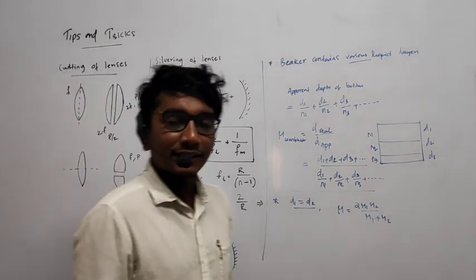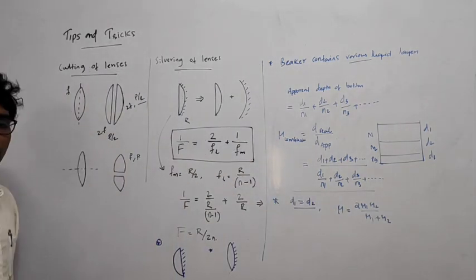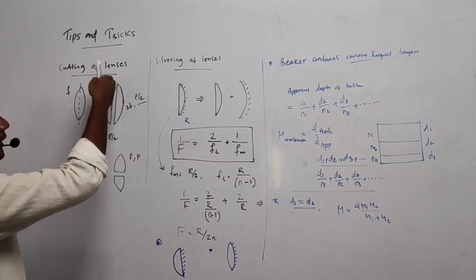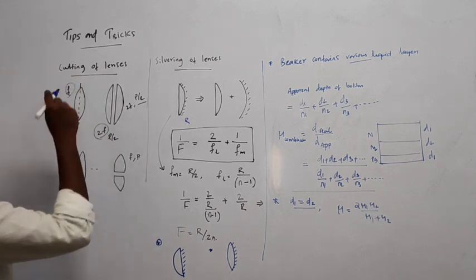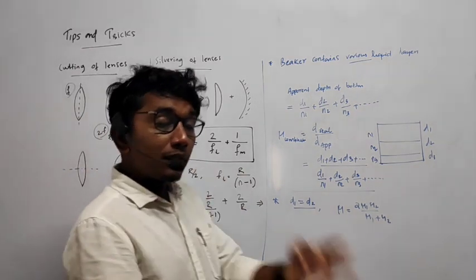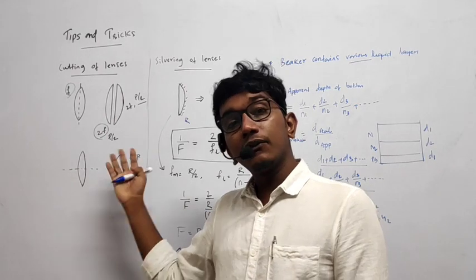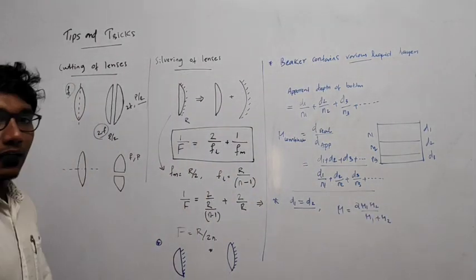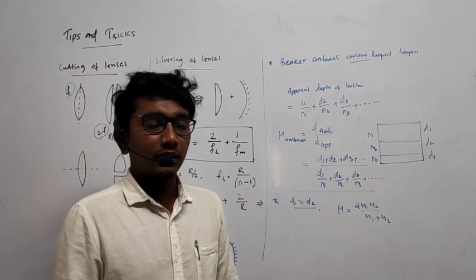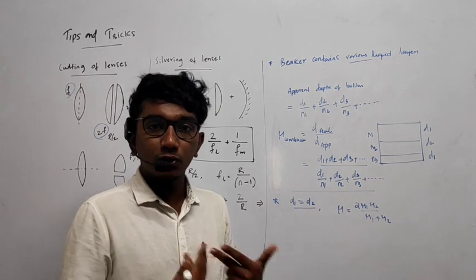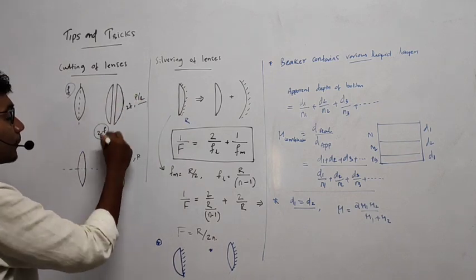Theoretically speaking, after a vertical cut, each half would behave like a lens with focal length equal to 2f — the focal length doubles. We can prove this, but we won't go into that derivation right now. We need to understand the idea and how to apply it in equations. So the new focal length will be 2f.